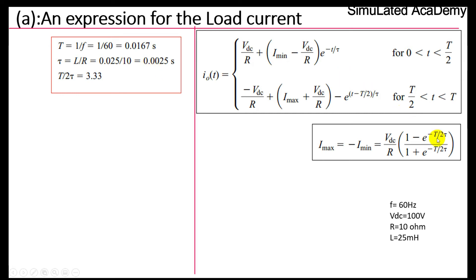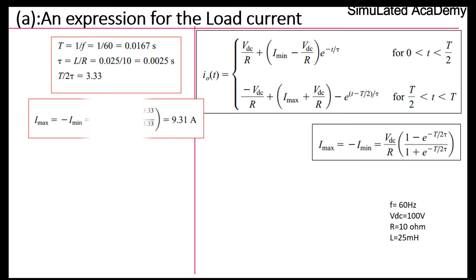Now let's calculate T/(2τ): T = 0.0167 s and τ = 0.0025 s, giving T/(2τ) = 3.3, a dimensionless constant. The maximum current is I_max = (VDC/R) · (1 − e^(−3.3)) = (100/10) · (1 − e^(−3.3)) = 9.31 A. Therefore I_max = 9.31 A and I_min = −9.31 A.